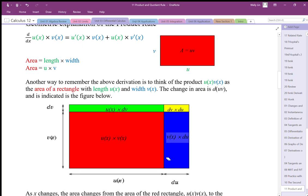How about the blue area? The blue area is going to have this width of v, and it has a length of du. So this change in area is represented by the v function times the change in the u function, or the derivative of the u function.